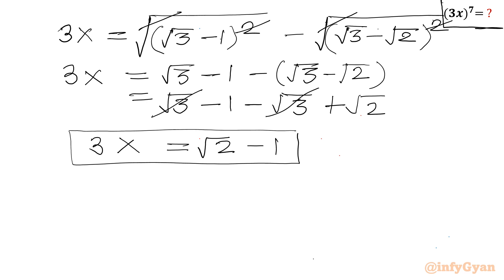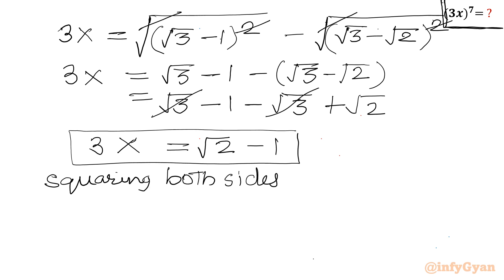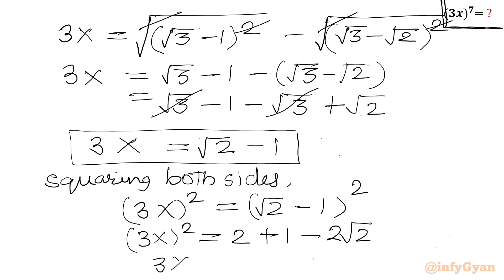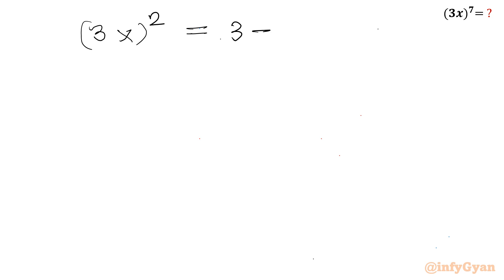Now we need (3x)^7, so let's start by squaring both sides. Squaring both sides gives (3x)² = (√2 − 1)². Expanding the right-hand side using (a − b)² = a² − 2ab + b²: (√2)² = 2, plus 1² = 1, minus 2·√2·1. So (3x)² = 3 − 2√2.